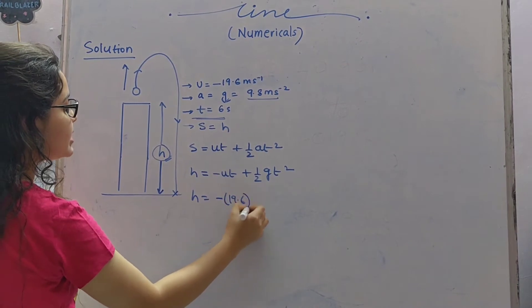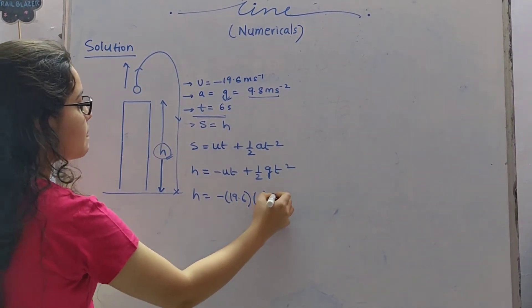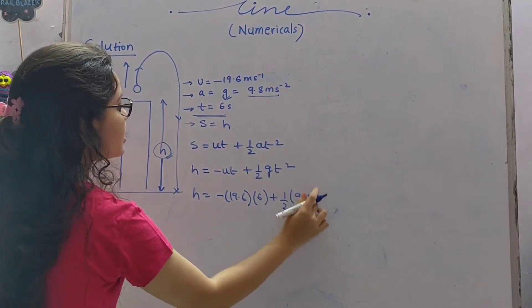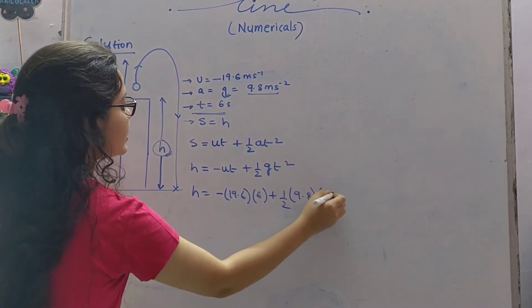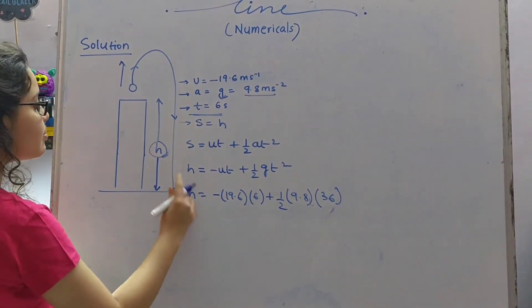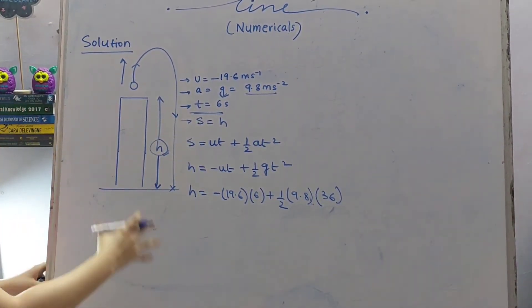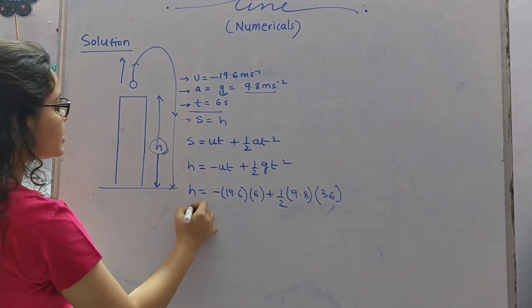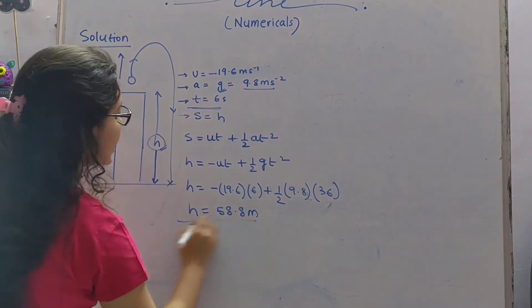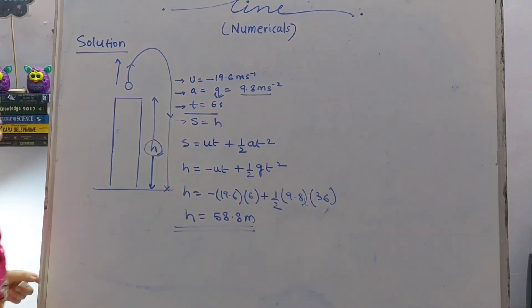So we get minus 19.6 into 6 plus half into 9.8 into 6 square which is 36. So you can carry out with all the calculations. But here the important point is that you understood how to solve this question. The answer you get is 58.8 meter. That is the height.